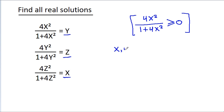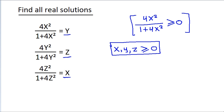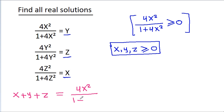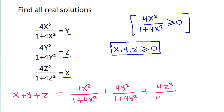So x, y, g they should be greater than or equal to 0. And if we add all three equations, then x + y + g will be equal to 4x²/(1+4x²) + 4y²/(1+4y²) + 4g²/(1+4g²).